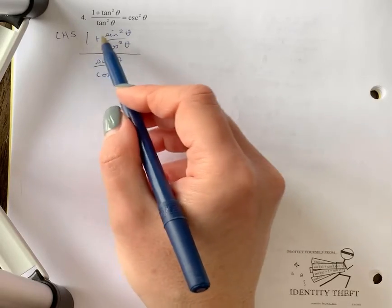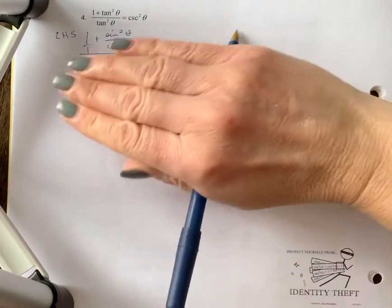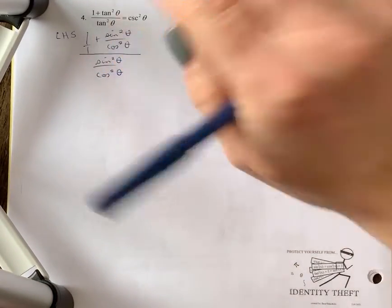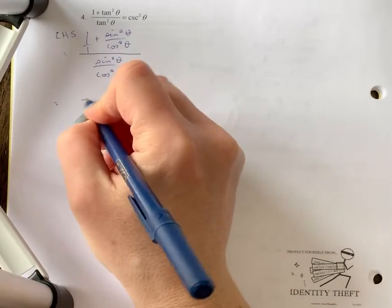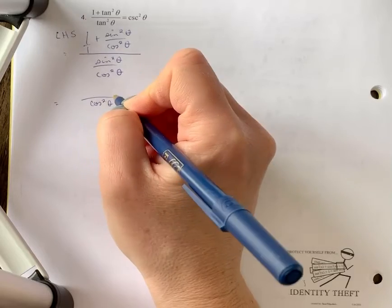All right, so what we need to do is we still have two terms up here. We want to make sure we add these. Right now it's like one over one, so I'm going to just add the top here. I want to get a common denominator. Between one and cos squared theta, cos squared theta is my common denominator.